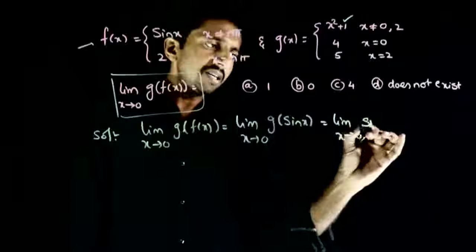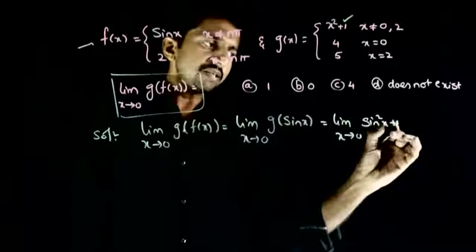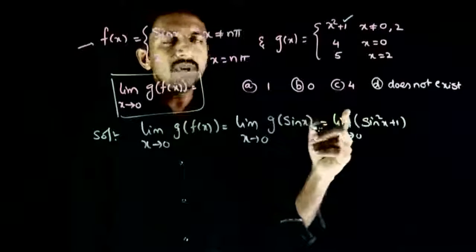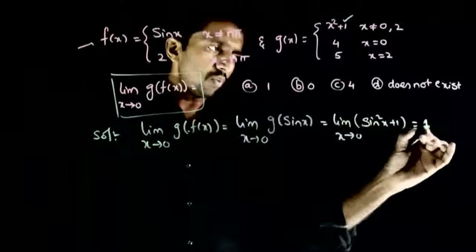So g(sin x) equals (sin x)² + 1. Therefore, limit x tends to 0 of (sin x)² + 1 equals 1.